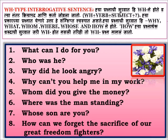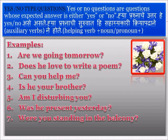Now let us see the second type of interrogative sentence. The second type is yes/no type questions. Yes or no questions are questions whose expected answer is either yes or no. These questions begin with auxiliary verbs. The formula is: helping verb plus noun or pronoun plus question mark.